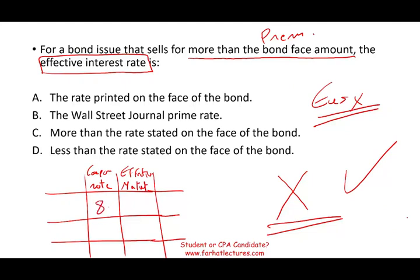Let's assume the coupon rate is 8% — meaning how much the company is offering to pay the bondholder is 8%. If the market rate or the effective rate is also 8%, the bond would sell at par. Why? Because if you're offering 8% and the market is requiring 8%, your bond and similar market bonds are offering the same thing. If the company is offering 8% and the market is offering 6%, then your bond will sell at a premium.